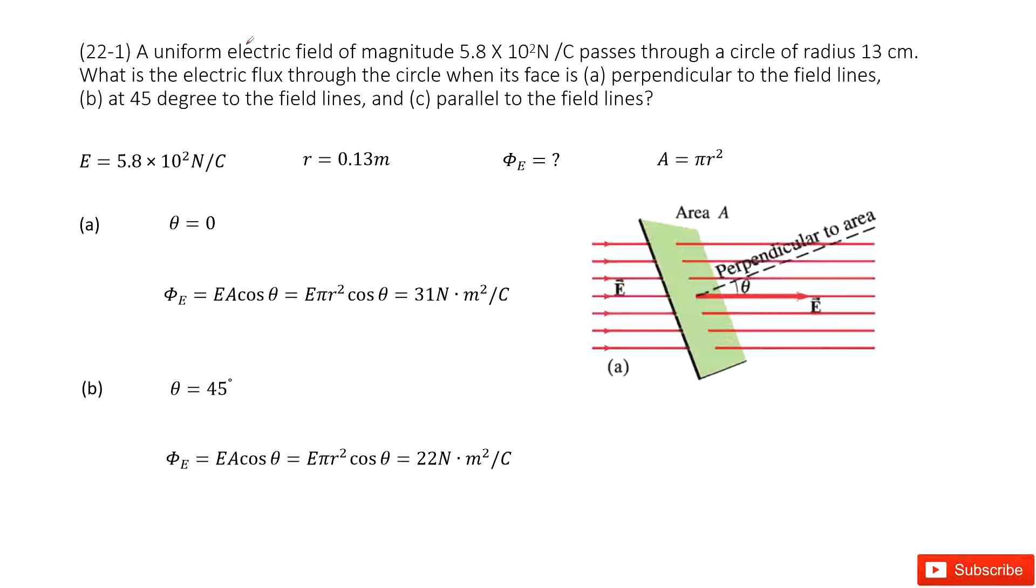So you can see there, we give you the electric field as magnitude, so we write it there. And then we tell you this is a circle. The radius is given. Very straightforward, you can get the area for this circle, right? Pi r squared, so we write it there.